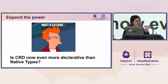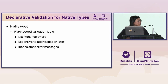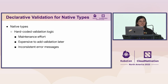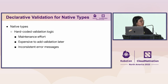Wait — if we take a step back and look at CRDs, that means CRD is now even more declarative than native types. Because as many of you may know, native types don't offer that much information. So what is validation done in native types? It's mostly hard-coded validation logic. You have no idea how many lines of validation just for the API sit inside the Kubernetes upstream repo — tens of thousands of lines only for API field validation. It's a lot of maintenance effort.